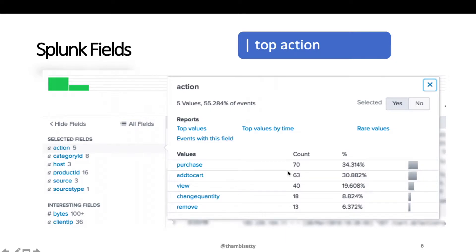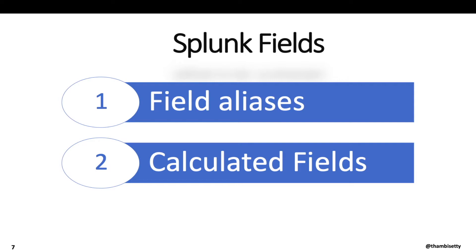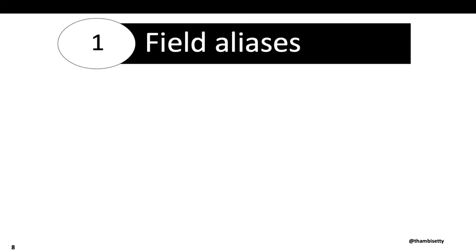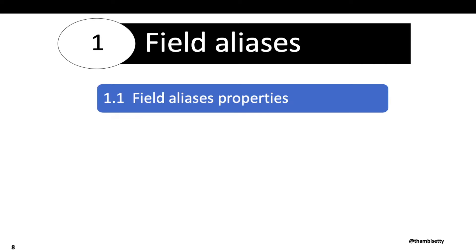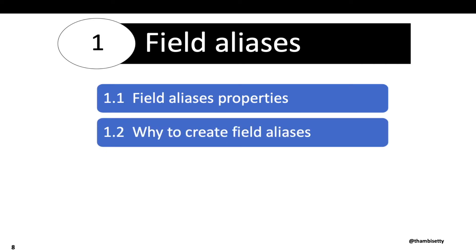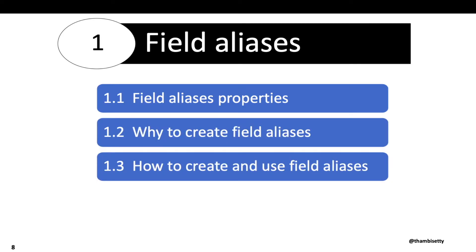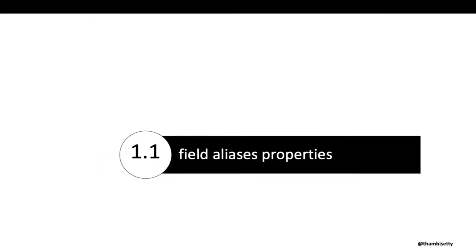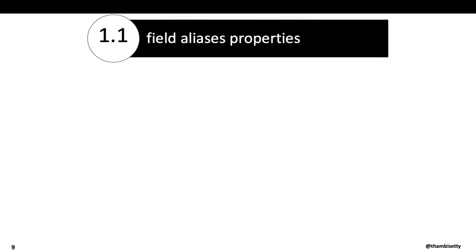Now that you have an idea of what Splunk fields are, let's understand more features — specifically field aliases and calculated fields as knowledge objects. Let's look at field aliases properties: why to create field aliases, how to create and use field aliases, and how to manage field aliases.